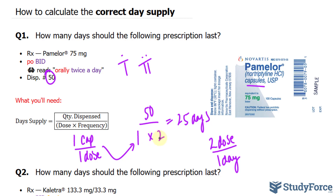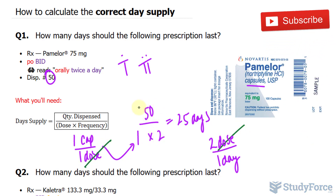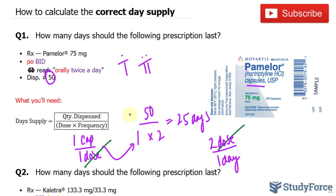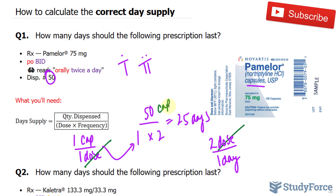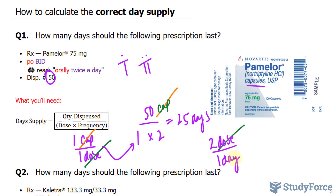Notice that by multiplying one and two, this cancels out with that. And 50 represents 50 capsules. This means that this unit will cancel out with this unit, leaving us with days. This is why we reported 25 days.